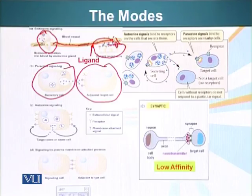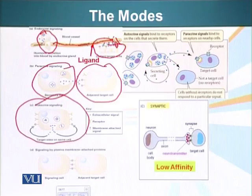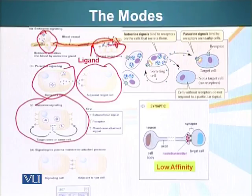Autocrine signaling is more predominant in, for example, the immune system — we will talk about this in more detail when we look at the immune system. Here, the cell produces the signaling molecule or ligand, and that same cell has receptors on its surface that can bind that ligand. So the cell is producing a signal and responding to itself.